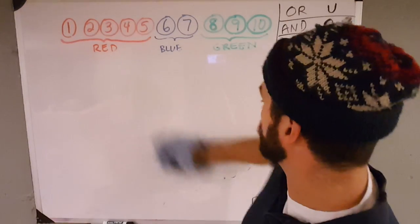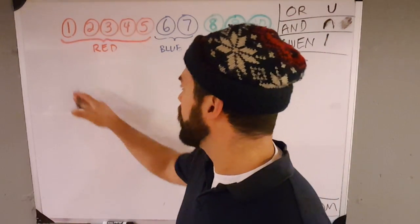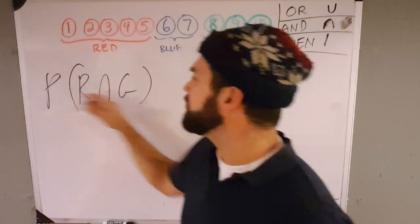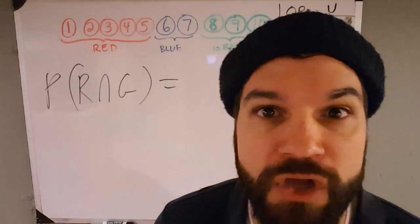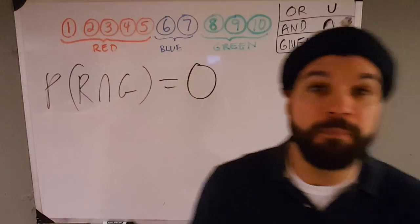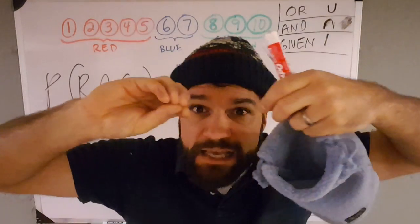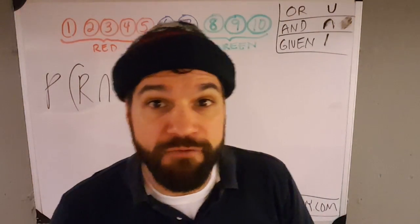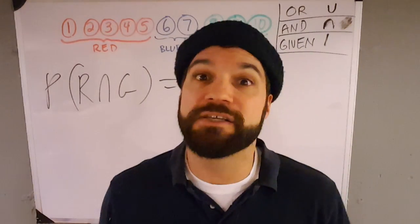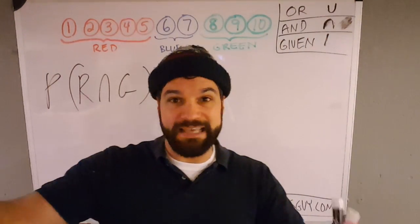Now, what if I was wondering: what's the likelihood I pull out one that's red and green? Are there any that are red and green? I didn't think so. The likelihood of pulling out a red and a green is zero because there are none — none of these chips are red and green. So because it can't be red and green at the same time, they're mutually exclusive, meaning they can't happen at the same time. The other word we use for mutually exclusive is disjoint.